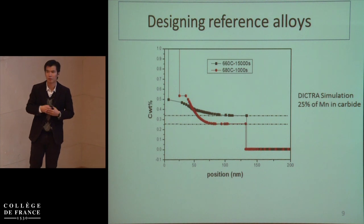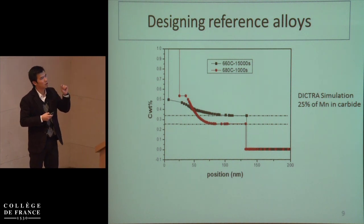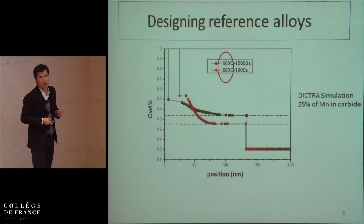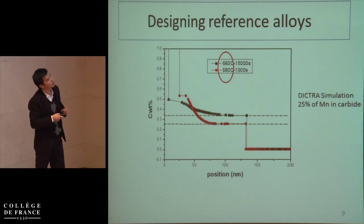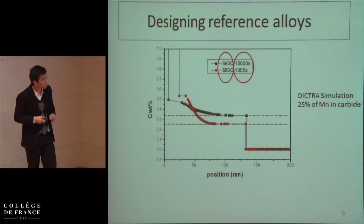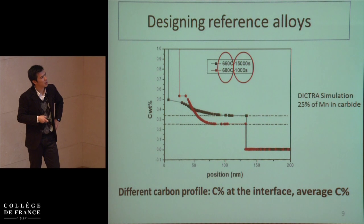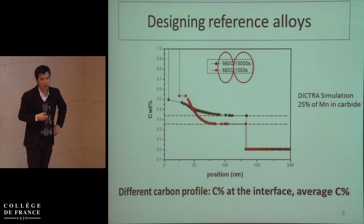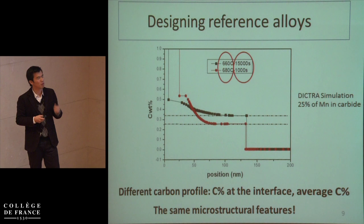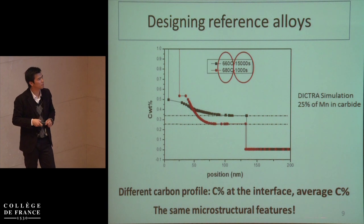From the DICTRA calculation we have an idea to develop reference alloys to test whether the carbon profile can have an effect on mechanical properties. It is a game on the annealing temperature. If we increase the annealing temperature, we can decrease the carbon content at the interface, and at the same time austenite formation kinetics will be accelerated. With this line of reference alloys we can have different carbon profiles, including different carbon content at the interface and the average carbon content within the martensite. Since they developed from the same ferrite-carbide mixture after intercritical annealing, they share the same microstructure features.